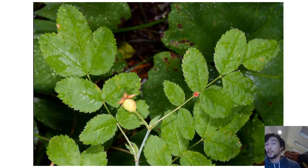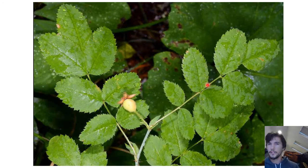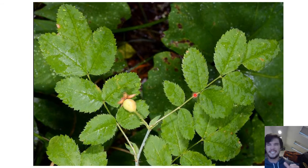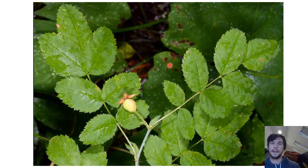Getting a closer look at the leaflets: they look superficially similar to some of the mountain ash leaflets — small little leaflets, oppositely arranged, about the size of the end of your thumb or slightly bigger. But notice these ones are serrated all the way around, and they're quite a bit fatter than those in mountain ash as well.